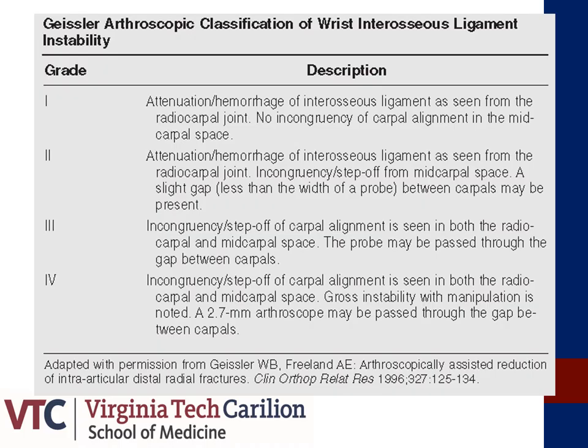Here is a table representation of the Geissler classification of wrist interosseous ligament instability. A Grade 1 is attenuation of the interosseous ligament with no evidence of incongruity. A Grade 2 shows attenuation with a less than 1 mm gap between the carpal bones. A Grade 3 will have incongruity or step-off evident on imaging with spacing greater than 1 mm, while a Grade 4 has incongruity noted on imaging, gross instability on manipulation, and allows for passage of the arthroscope between the carpal bones — the drive-through sign.